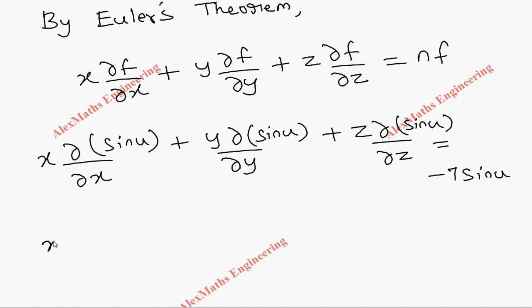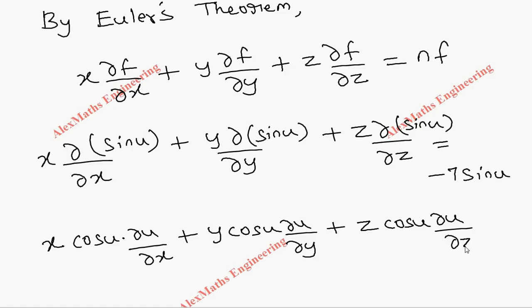Now, x into differentiation of sine u is cos u, and using chain rule, derivative of u with respect to x is ∂u/∂x. In the same way, y into cos u, and this is with respect to y, so ∂u/∂y. The last term is z into cos u into ∂u/∂z.